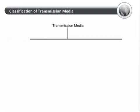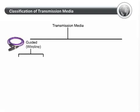Let's expand our basic wired versus wireless, or guided versus unguided, classification and look at specific media that are examples of each kind. Broadly, wireline media are differentiated into copper wires — sometimes also called electrical media — and optical fibers.